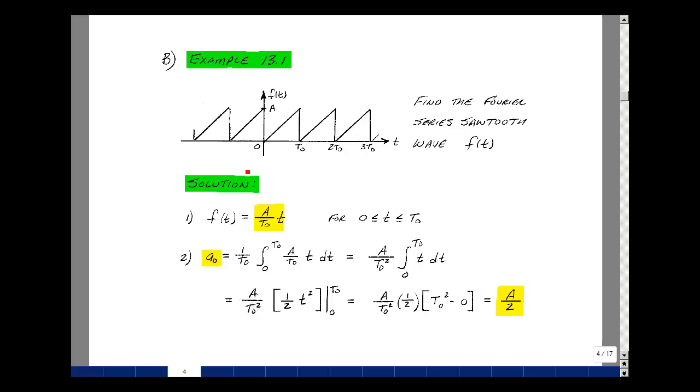Our period here is from 0 to t0, just a straight line passing through the origin. The slope, rise over run, times t would be our equation. The rise is a, and the run is t0 minus 0. Now here's our slope of a over t0 times t. When t is equal to 0, f of t is 0, and when t is equal to t0, we just have a, a straight line.